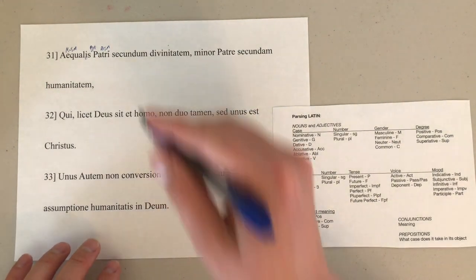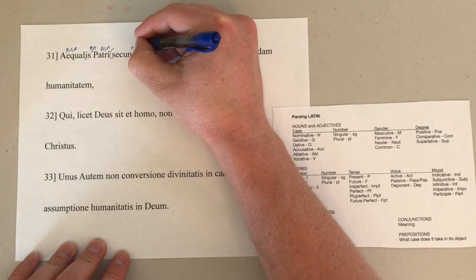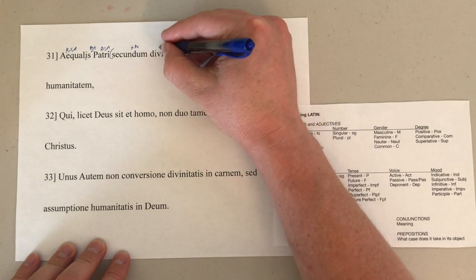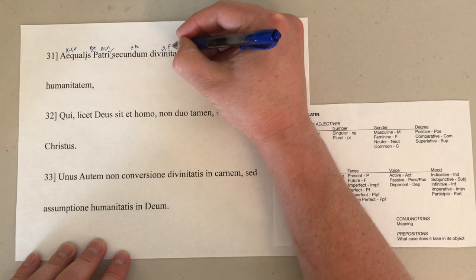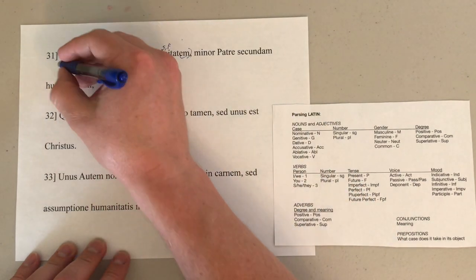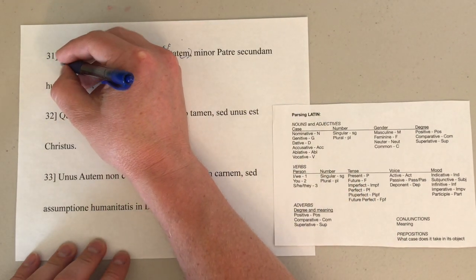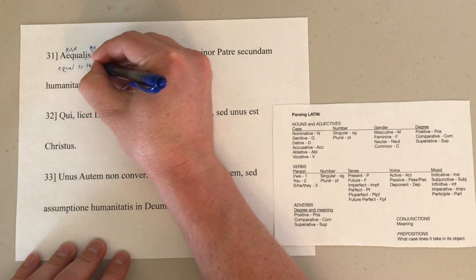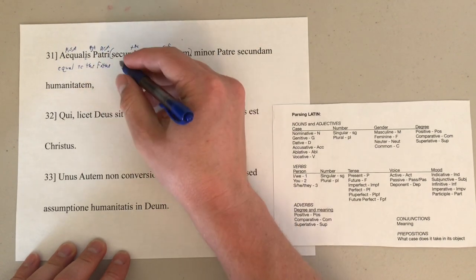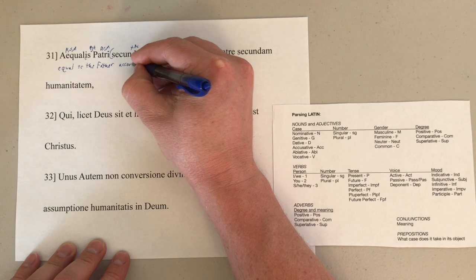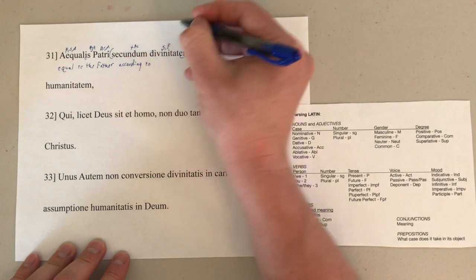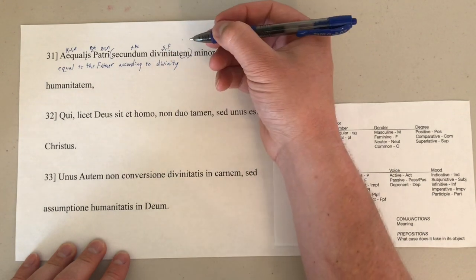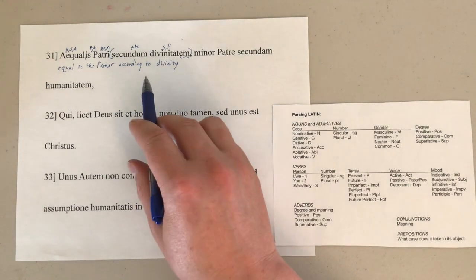It's frequent. So a prepositional phrase starting here, plus the accusative, ending right there — divinitatem with the -em in there is, of course, accusative, singular, and feminine, as was said. So then our whole sentence is: he is — understood — equal to the Father according to divinity. And we could understand a possessive pronoun in there if we wanted to.